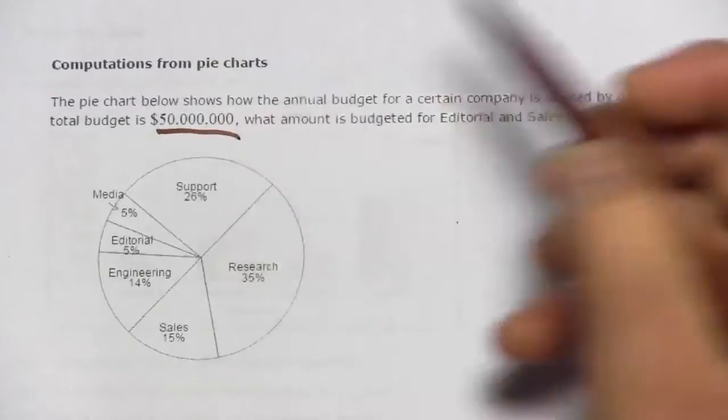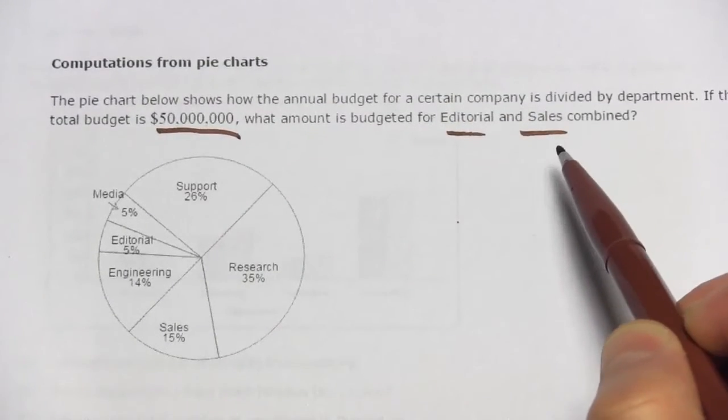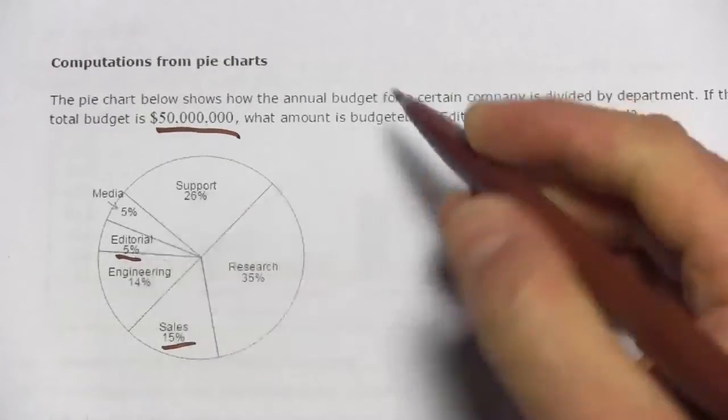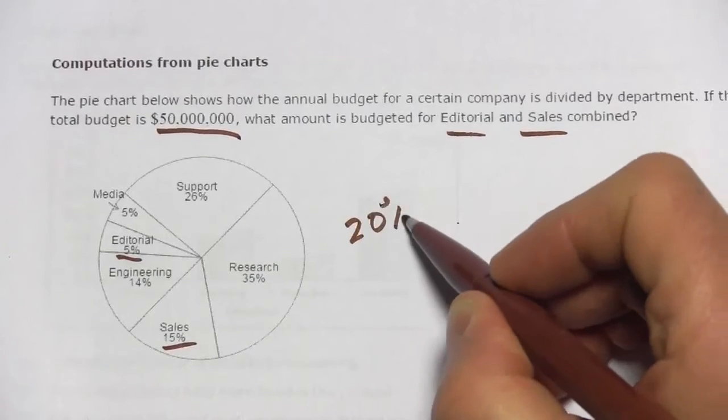Okay, so the whole thing is 50 million. Editorial and sales - editorial is 5% and sales is 15%. So total, they're 20% when you put them together.